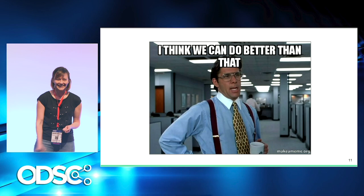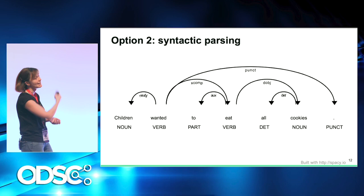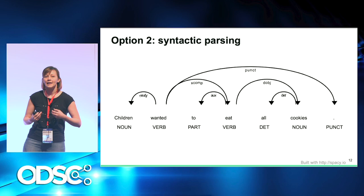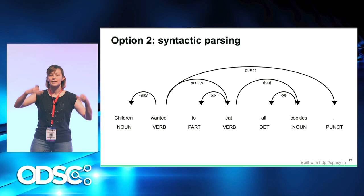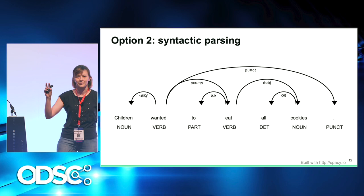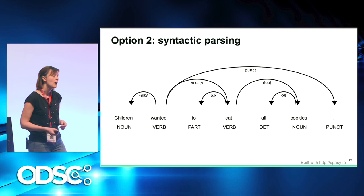The next level of text analysis that gives us more information is syntactic parsing — defining parts of speech and building a syntactic representation of the sentence. The syntactic representation you see on screen is called a dependency parse tree. A dependency parse tree shows you the dependencies between words in the sentence. For example, here you can see that 'children' are the subject of the verb 'wanted,' and 'to eat' is an open clausal complement of the word 'wanted.'